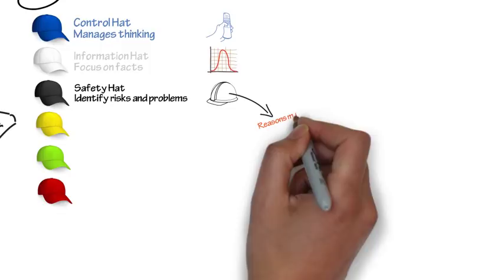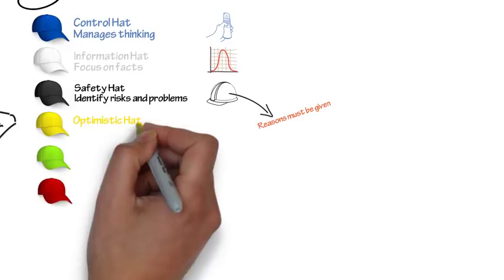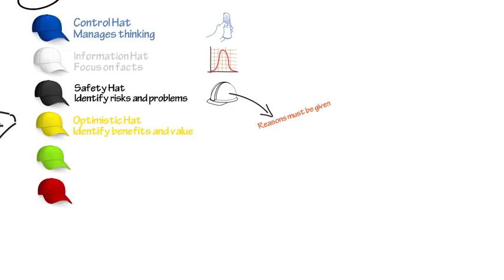The yellow hat is our optimistic hat. It's used to identify benefits, value, and feasibility, considering both the short-term and long-term perspectives. This hat is actually much harder to use than the black hat. As before, reasons must also be given when wearing the yellow hat.